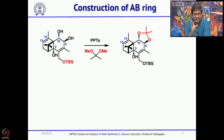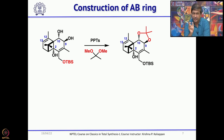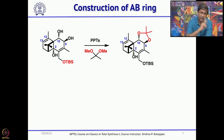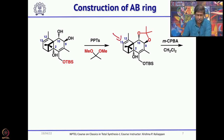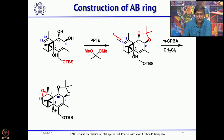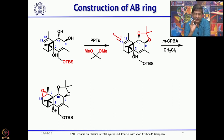That sets the stage for the key rearrangement or key fragmentation. We have already discussed the first key reaction — the photochemical reaction where the 1,3-alkyl shift took place along with migration of the double bond. Now for the second key reaction, we have come to the key precursor. What you need to do is make the epoxide here, followed by the fragmentation. Treatment with one equivalent of MCPBA gives the epoxide stereoselectively at carbon 12 and 13.